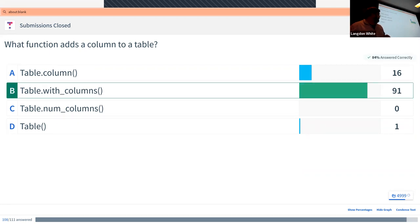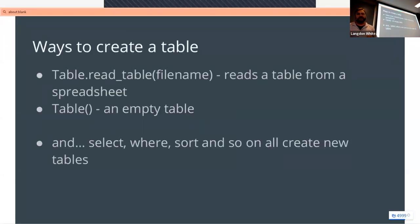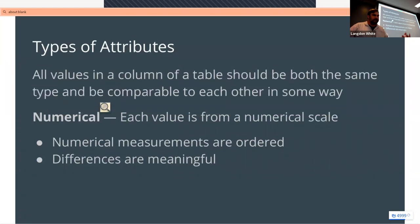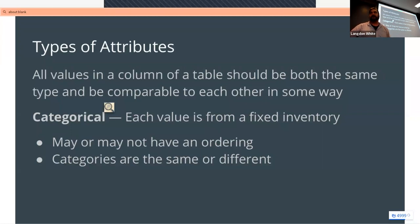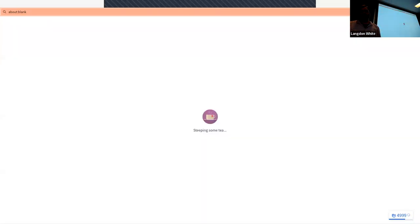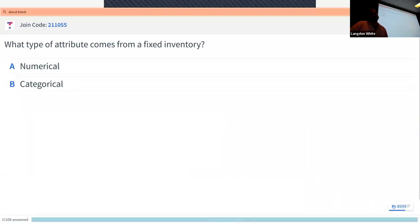Let's recap a little bit on tables. We create a table with 'read_table' with a file name, or we can create an empty table. We have numerical attributes — those are ones treated like numbers — and we also have categorical attributes, which are from a fixed inventory, basically like a drop-down list. There are lots of numbers that are also categorical — for example, a UID or a Social Security number.